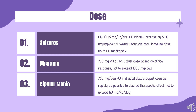Migraine: Indicated for prophylaxis of migraine headaches; there is no evidence of use for acute treatment. Stavzor: 250 mg PO Q12H; adjust dose based on clinical response, not to exceed 1,000 mg/day.